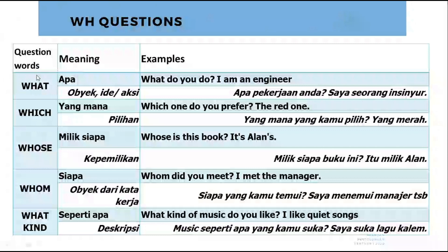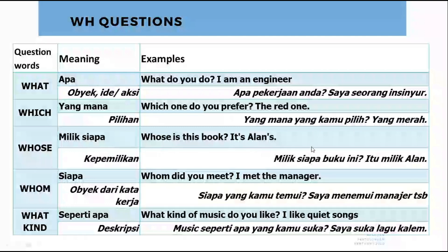Pertama what dulu. 'What' artinya apa. 'What do you do?' Apa pekerjaan anda? 'What's for breakfast?' Apa nih sarapannya? Contoh: 'What do you do? I am an engineer.' 'Which?' Yang mana — berarti menanyakan pilihan. 'Which one do you prefer? The red one.' Yang mana yang kamu pilih? Yang merah. 'Whose?' Milik siapa? 'Whose book is this? It's Alan's.' 'Whom did you meet? I met the manager.' Siapa yang kamu temui? Saya menemui manager tersebut. 'What kind?' Seperti apa — jawabannya berupa deskripsi. 'What kind of music do you like? I like quiet songs.' 'What kind of people are you? I am a friendly people.' 'What kind of food do you like? I like spicy food.'